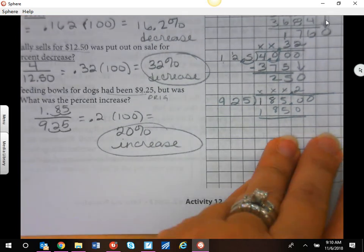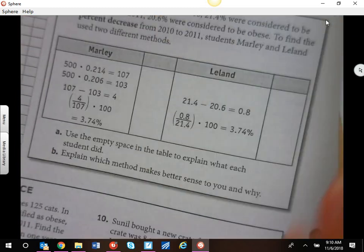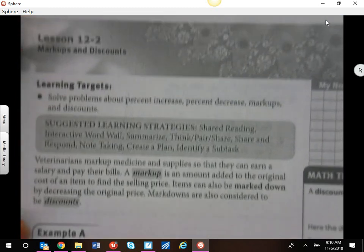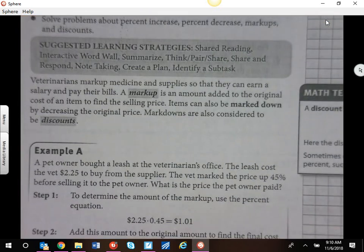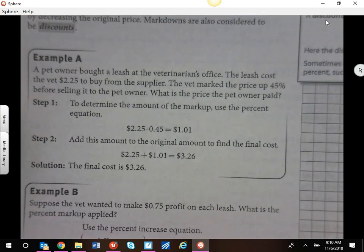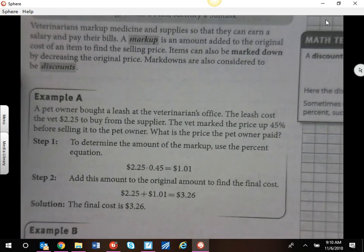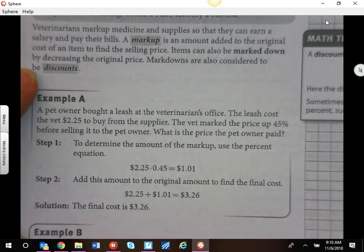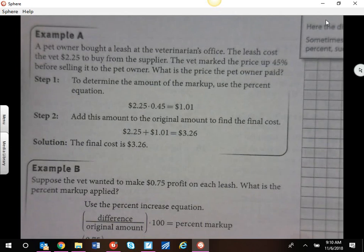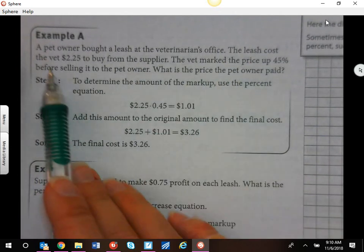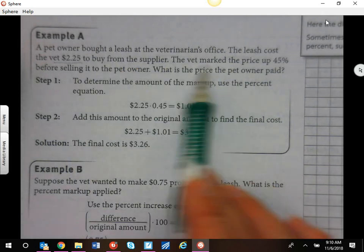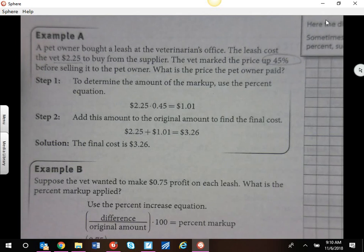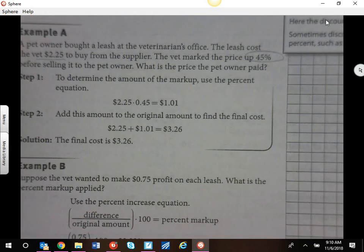When we talk about markup and discounts, it's the same thing. When we go to pay for things, a markup means that we're going to have to pay more than the people who are selling it had to buy it for. A markdown is a decrease. A pet owner bought a leash at the vet's office. The leash costs the vet $2.25 from the supplier, but they're going to mark it up 45%. When you go to a store and buy something, they mark it up more than what they paid so they can make some money.